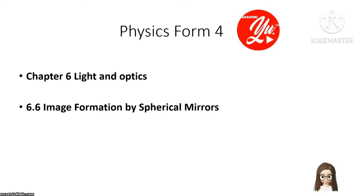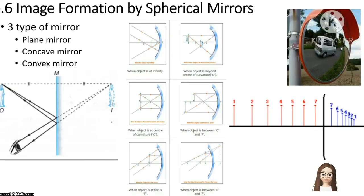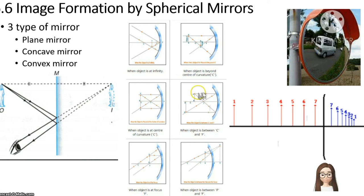Hello, I'm Teacher Diddy. Today we are going to study Chapter 6: Light and Optics, Physics Form 4, Chapter 6.6: Image Formation by Spherical Mirror. There are three types of mirrors: plane mirror, which you have learned in lower form under the science subject, concave mirror, and convex mirror. Our focus for today's lesson is the convex mirror.